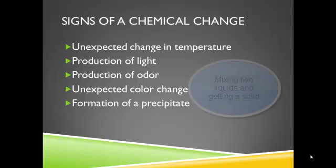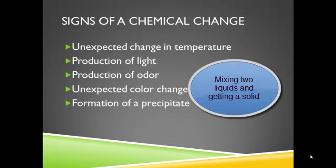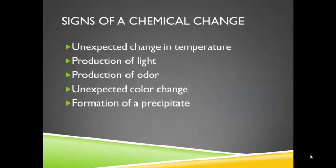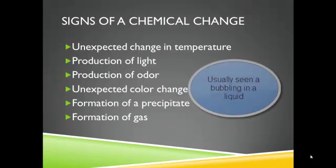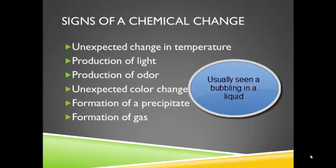Formation of a precipitate — that's something we'll talk more about in class. In general, a precipitate happens when you mix two liquids and it creates a solid. Or a gas forms: sometimes you mix two things and it starts to bubble. Generally, when a gas forms, that's a sign of a chemical change.